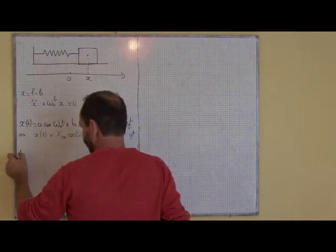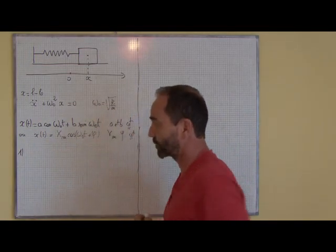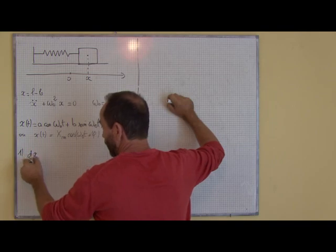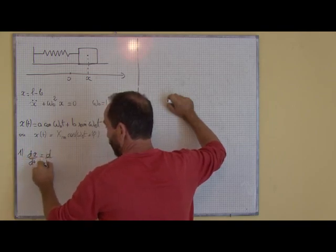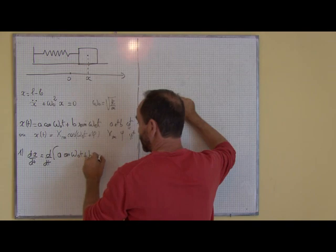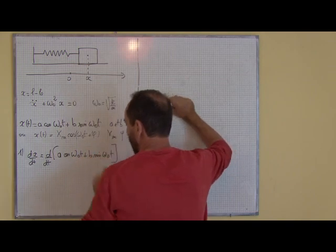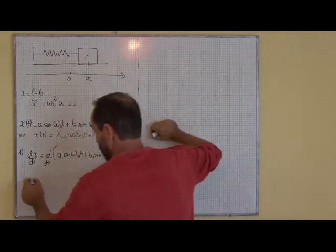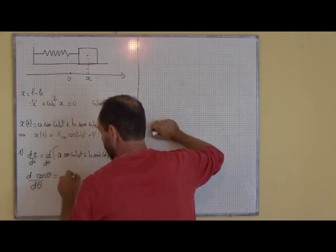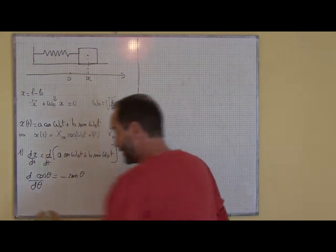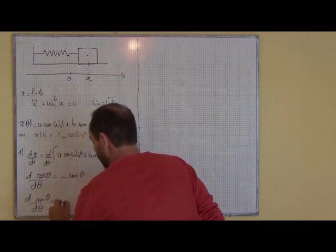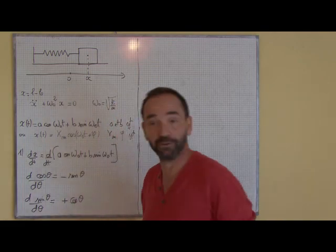On va commencer par la première. Voici x(t). Dérivons x par rapport au temps dans un premier temps. Si je dérive x par rapport au temps, je vais dériver par rapport au temps l'expression suivante : petit a·cos(ω₀t) plus petit b·sin(ω₀t). On rappelle une chose : la dérivée de cos(θ) par rapport à θ vaut moins sin(θ), c'est la première chose. Et la dérivée de sin(θ) par rapport à θ est égale à plus cos(θ). Ça, c'est la première chose à connaître.